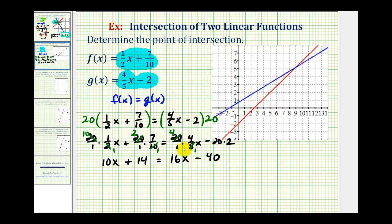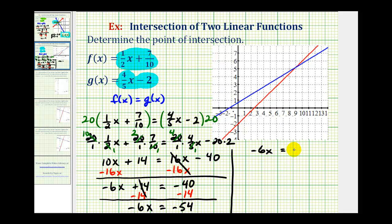So now we need to solve this equation for x, so we'll start by subtracting 16x on both sides of the equation. This will give us negative 6x plus 14 equals zero, and then we have negative 40. So now we'll subtract 14 on both sides. This will be zero, so we have negative 6x equals negative 54. Divide both sides by negative 6, and we have x equals 9.